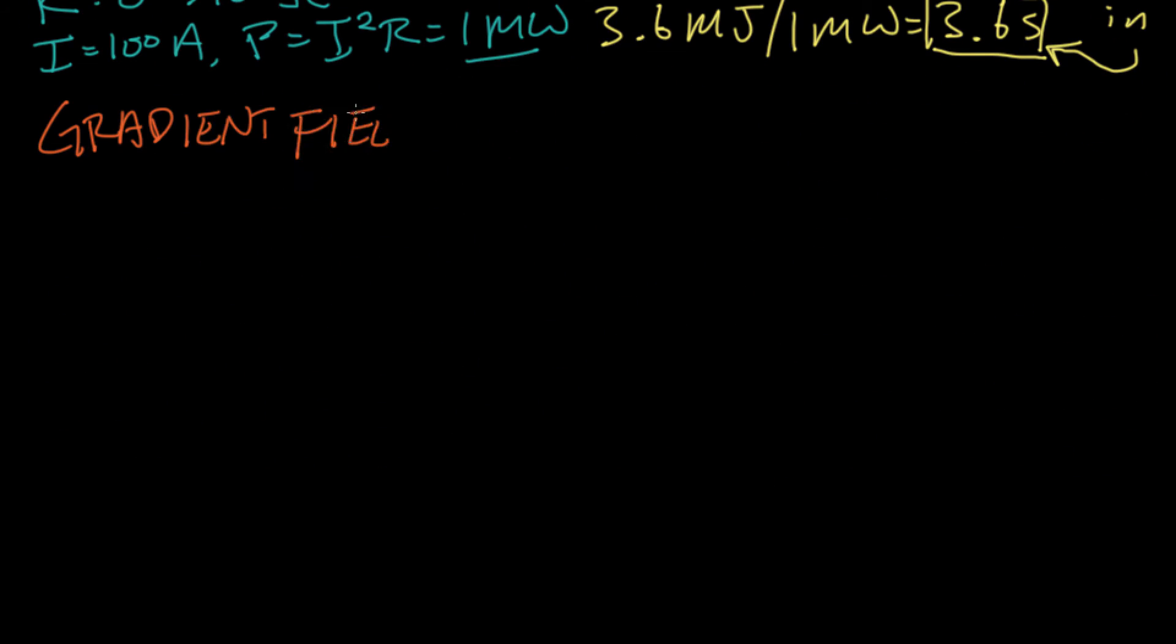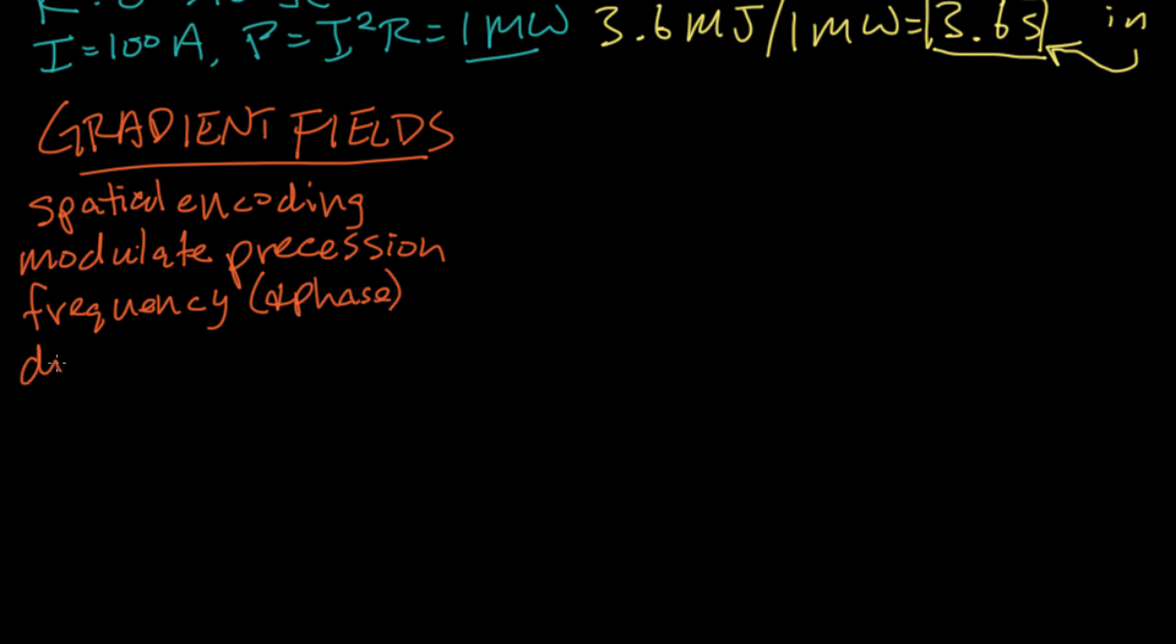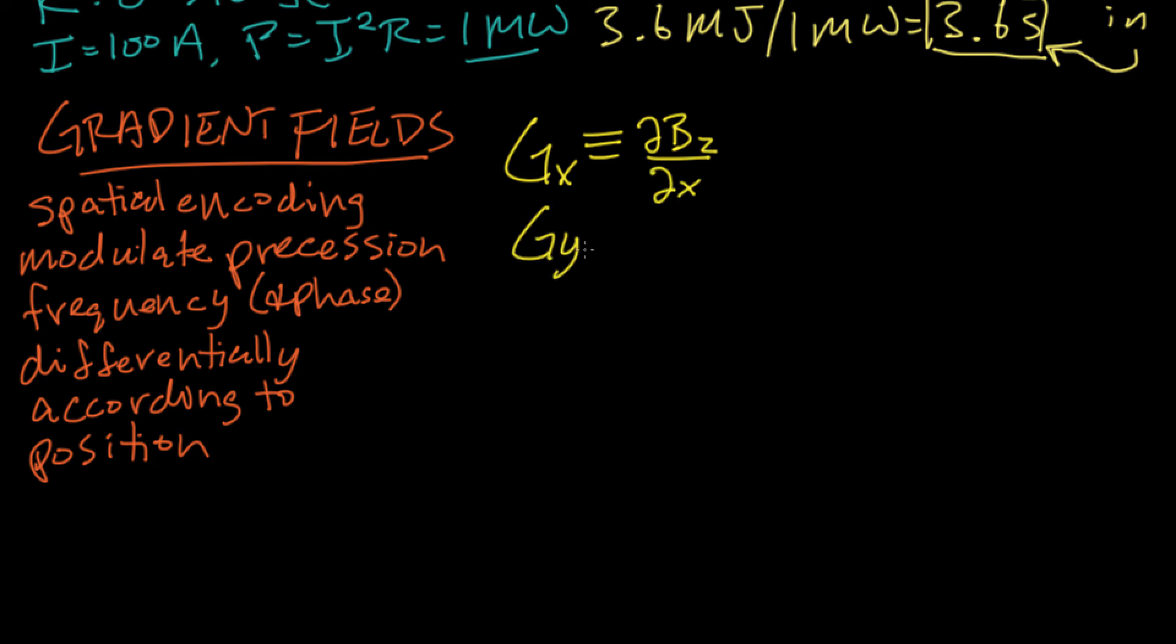Okay, now moving on to gradient fields. The job of the gradient fields are to provide spatial encoding. They do that by modulating the precession frequency, and therefore phase of spins, differentially or according to position. There are three independently controlled gradient coils and sets of gradient fields. Each of the gradient axes is characterized by the partial derivative of the z component of the field with respect to their coordinate. And the reason that the z component of the field is what matters is as follows.